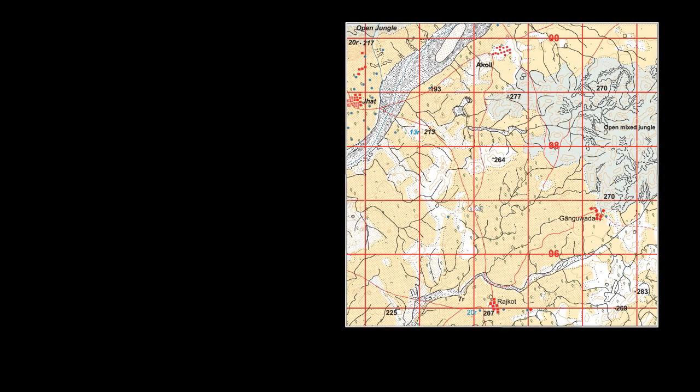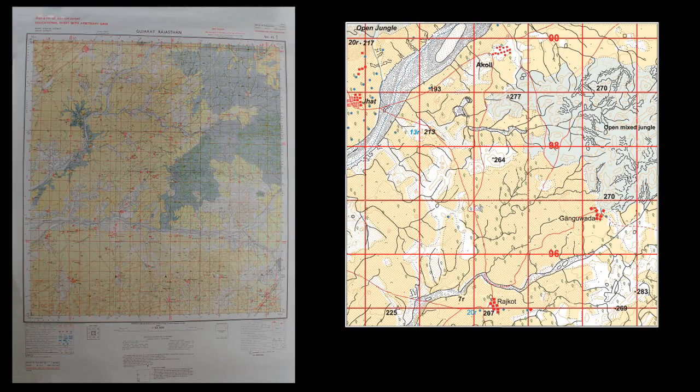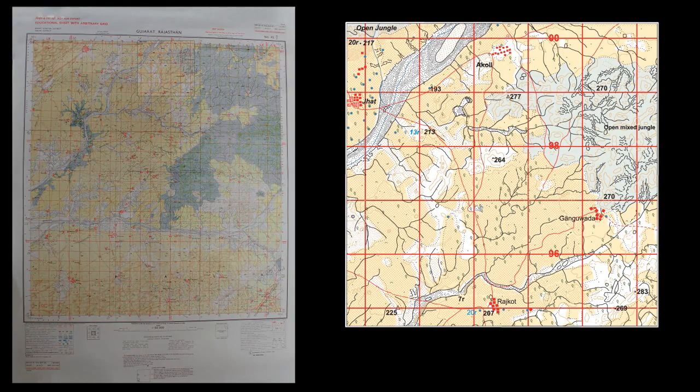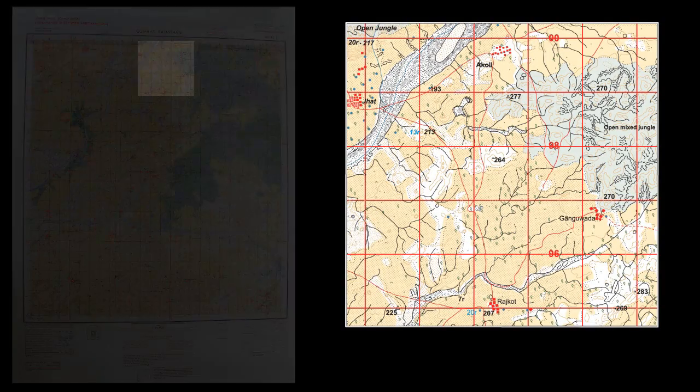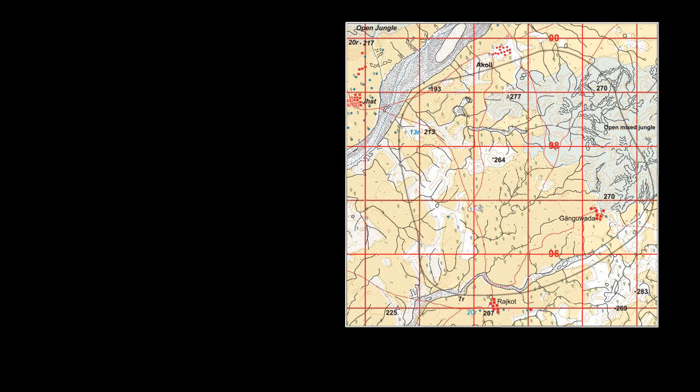The area of the map can be calculated by counting the number of grids in a given area. The given topo sheet is part of 45 D oblique 7. To calculate the area of the given part of the topo sheet, the grid squares within that region are counted.